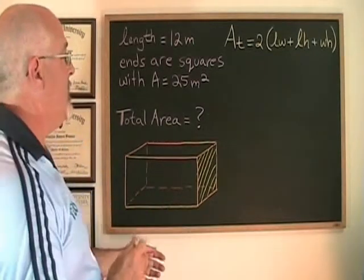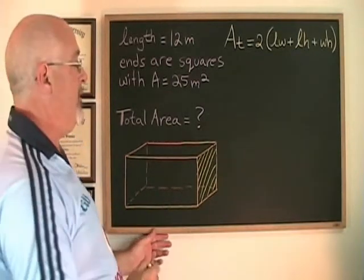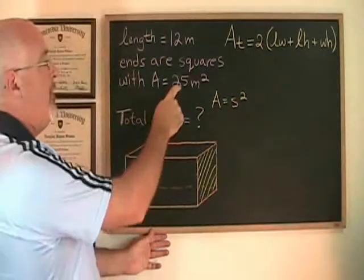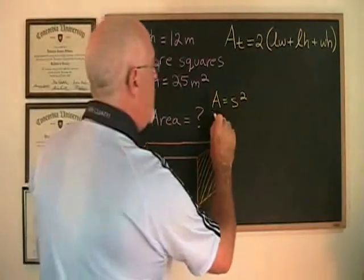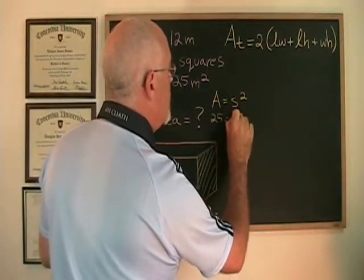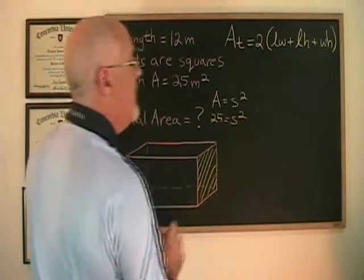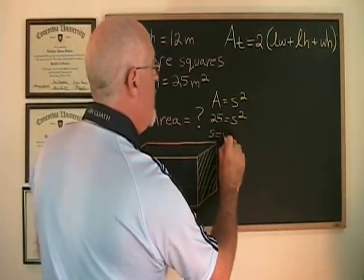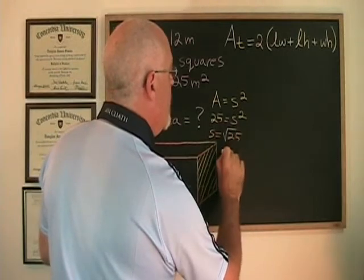This forces us to use the area of a square formula, which is A equals side squared. We were given the area, so we have 25 equals side squared. The side length is going to be equal to the square root of 25, which is 5.